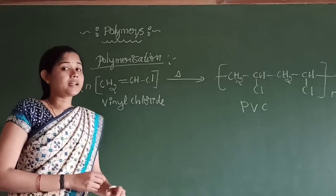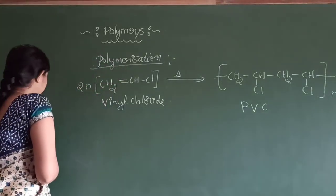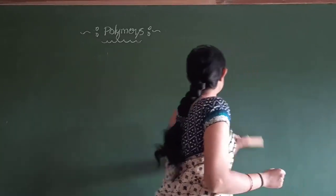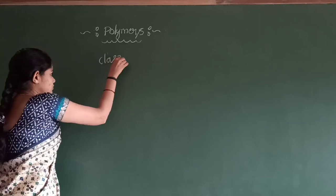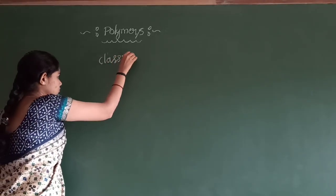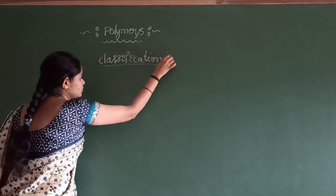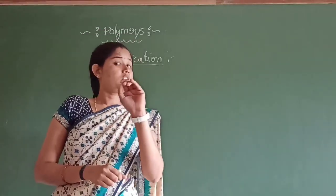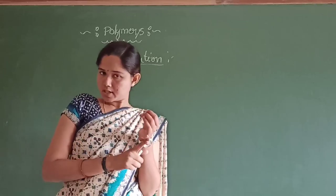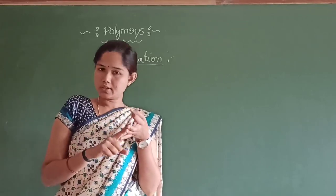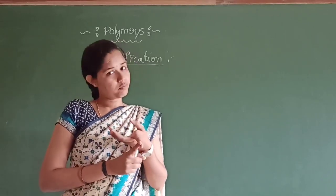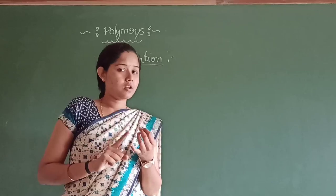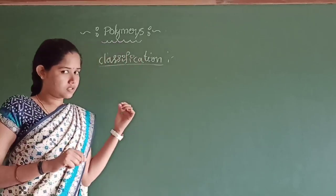Next is the classification of polymers. Polymers are classified into five main categories: based on their source, based on their structure, based on their molecular forces, based on the arrangement of monomer units, and based on growth polymerization.